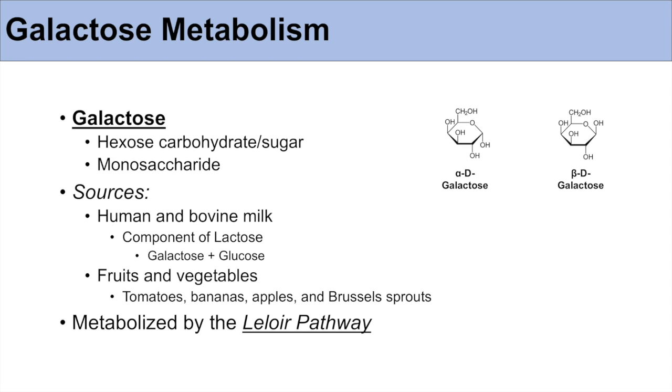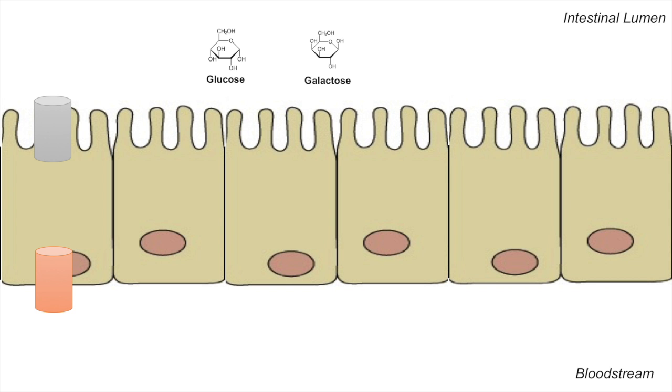And once we've ingested galactose, galactose is actually metabolized by a specific pathway known as the Leloir pathway. So before we get into galactose metabolism, what happens when we ingest galactose? How does it get absorbed?